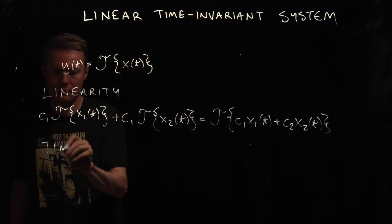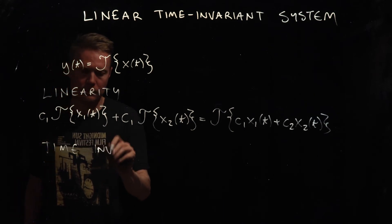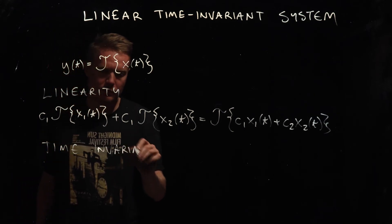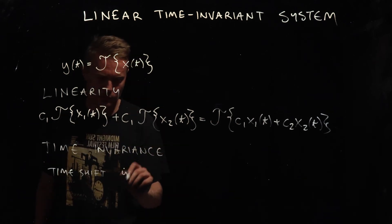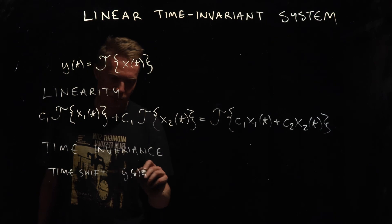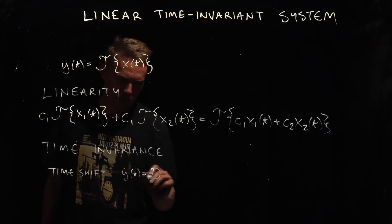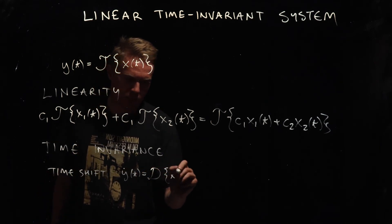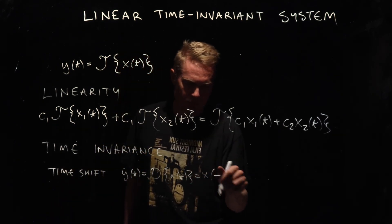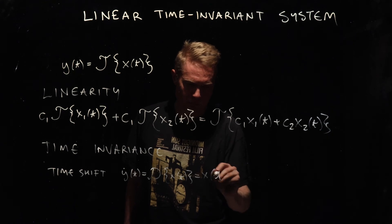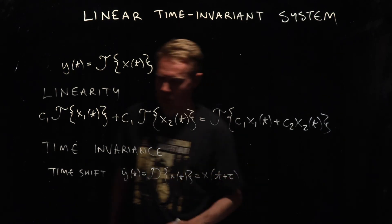In order for a system to be linear and time-invariant, the system also needs to be time-invariant. Let's first define a time-shift system. A time-shift system will be denoted with d. If we feed input x into a time-shift system, the input signal will be shifted in time by a constant tau.